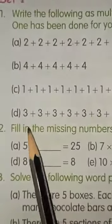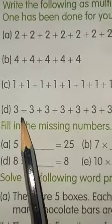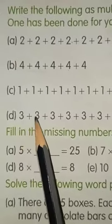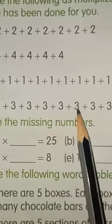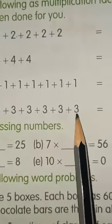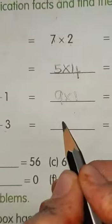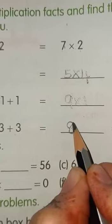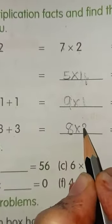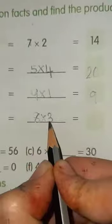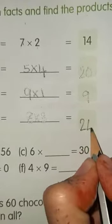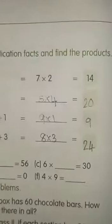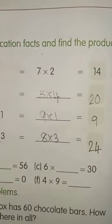Next, we have 3 here. Let's count how many times it is. 1, 2, 3, 4, 5, 6, 7, 8. Here, we have 8 times 3. 8 threes are 24.